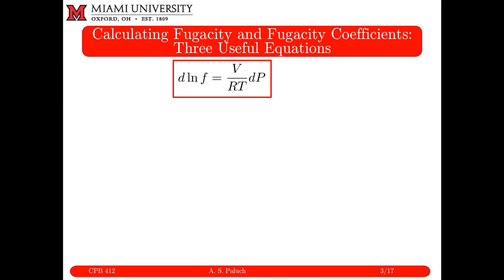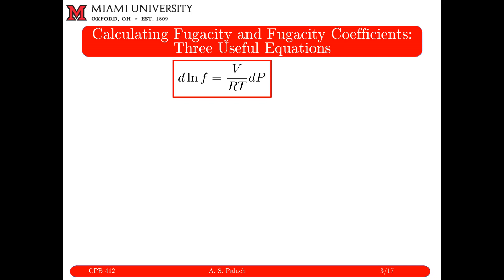My link to calculating fugacity is: d log F equals V/RT dP. To get fugacity coefficient, we use a math trick — adding zero — by subtracting d log P from both sides. So now I have d log F minus d log P on the left, and V/RT dP minus d log P on the right.